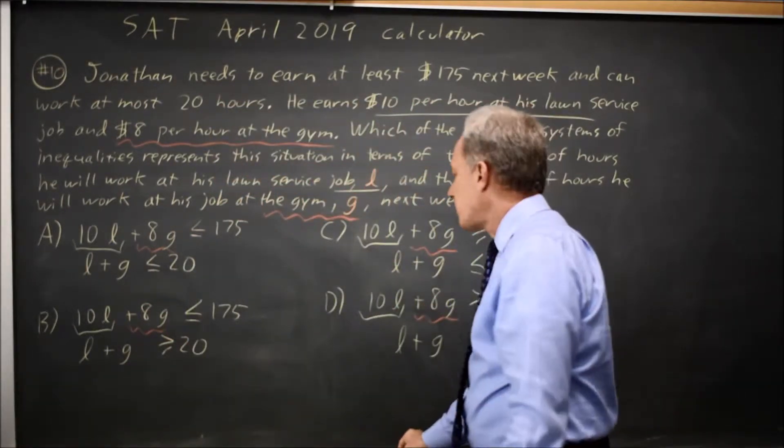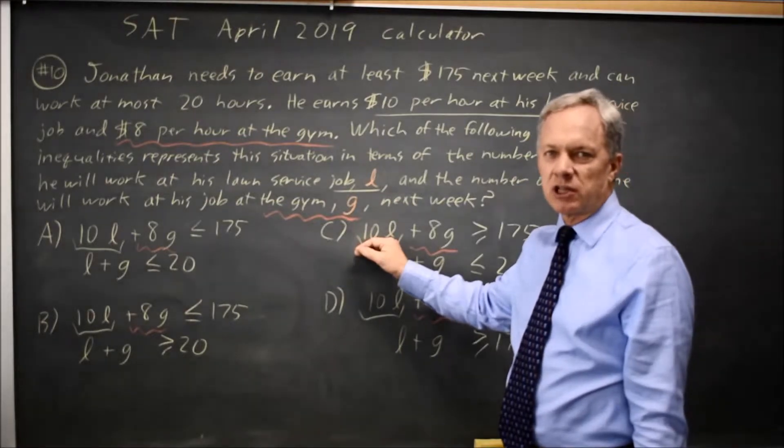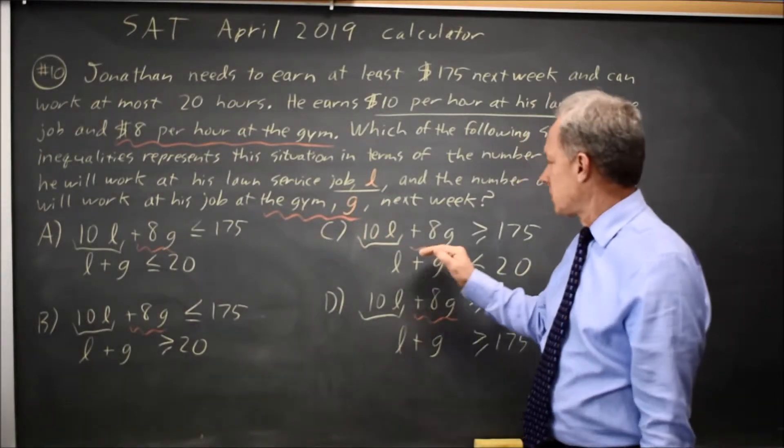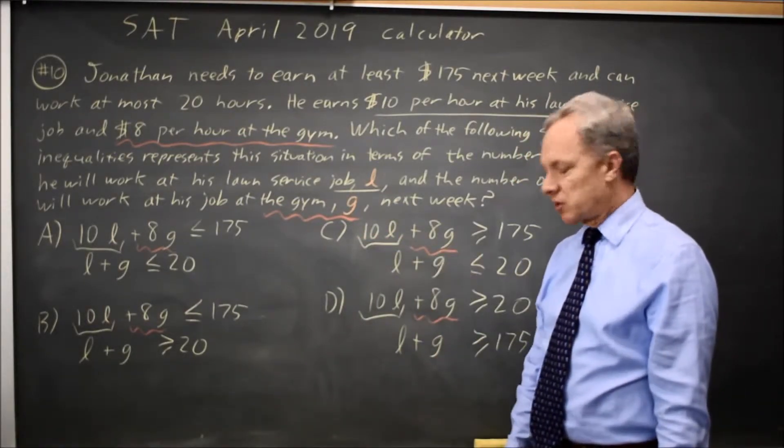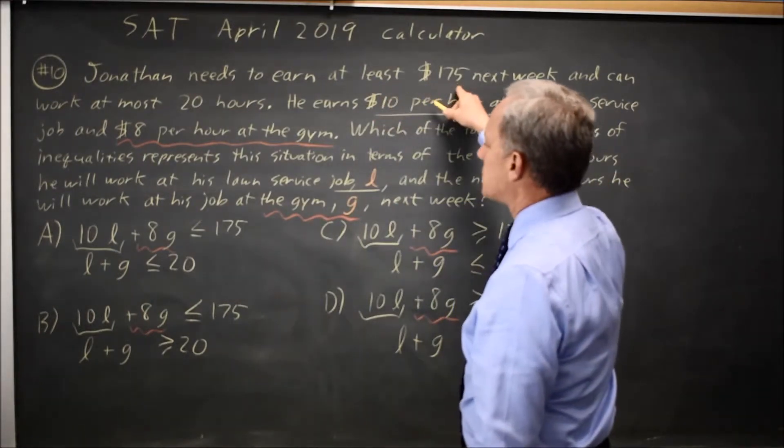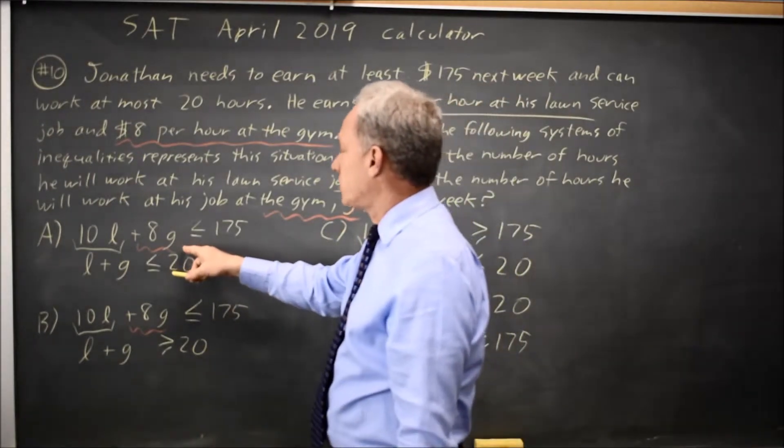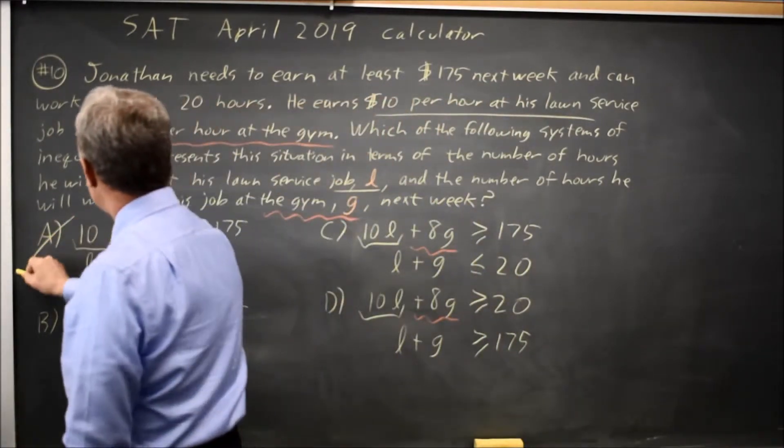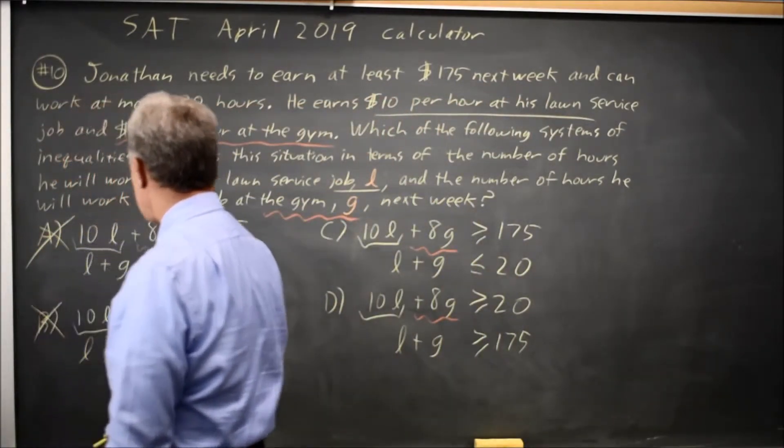So the sum of the 10L for his earnings for lawn service and the 8G for his earnings at the gym would be his total earnings, and we're told he wants to earn at least $175. So 10L plus 8G should be greater than or equal to $175, not less than or equal to. A and B are wrong.